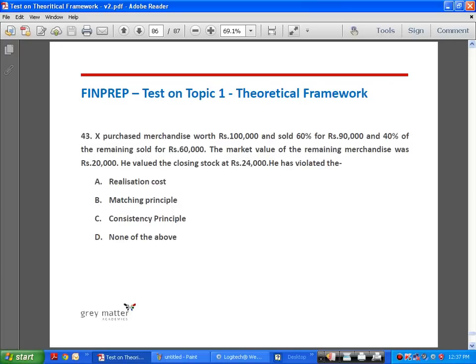Question 43: X purchased merchandise worth Rs. 1 lakh, sold 60% for Rs. 90,000 and 40% of the remaining for Rs. 60,000. Market value of remaining merchandise was Rs. 20,000, but he valued stock at Rs. 24,000. He violated the conservatism or prudence principle, which requires valuing stock at the lower of cost or net realizable value. He should not have valued it above market value. Answer is D, none of the above options listed — he violated the conservatism/prudence principle.